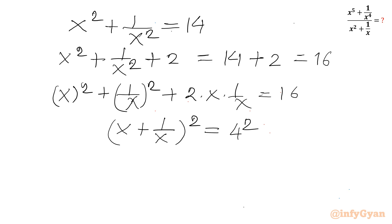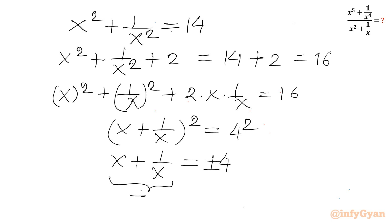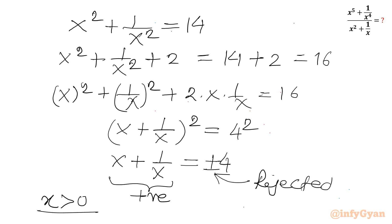16 can be written as 4 square. I will take the square root of both sides: x plus 1 over x equals plus or minus 4. Now x is positive, so the left-hand side is always positive for x greater than 0. The right-hand side cannot be negative, so I reject the minus sign.